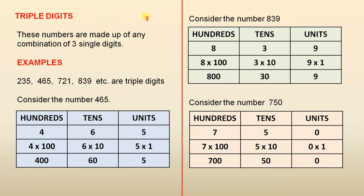Triple digits. These numbers are made up of any combination of 3 digits. Here are 4 examples. Very straightforward. They're triple digits, because they have 3 single digits.